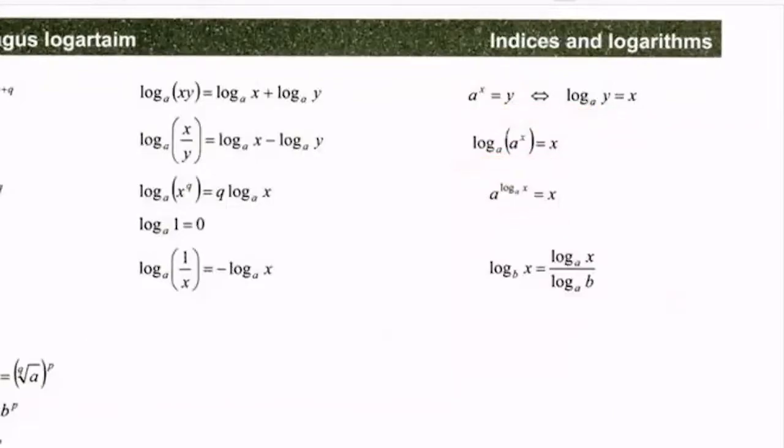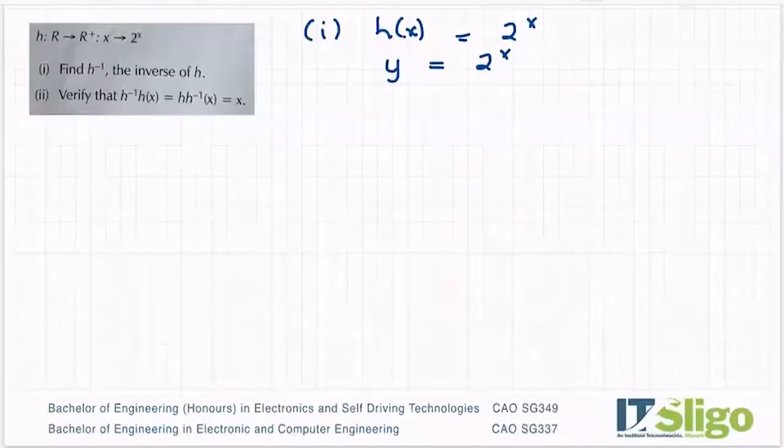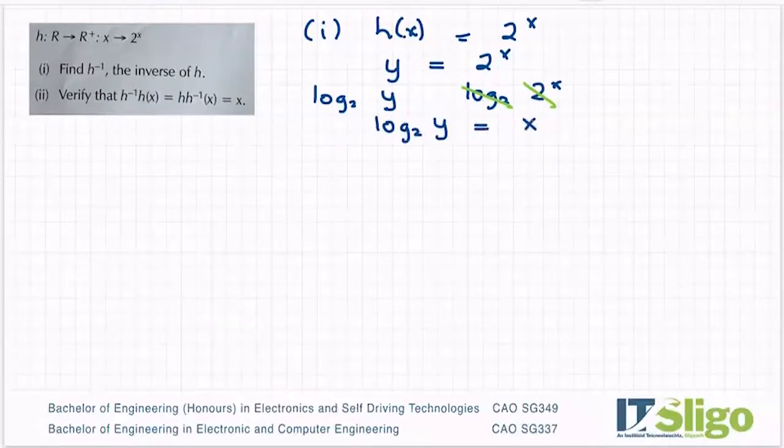However you wrap your head around logs and indices. So I'm going to do log base 2 here of 2^x. What I do to one side I have to do to the other. So I am getting log base 2 of y being equal to x.